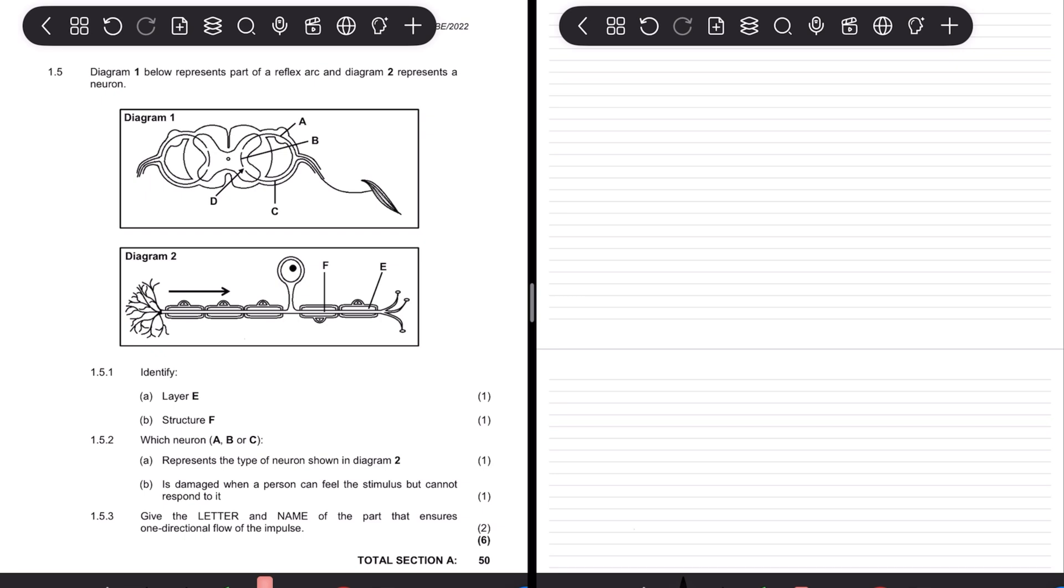Okay, let's go 1.5.1, identify layer E. So you can see in diagram 1 we don't have E, in diagram 2 we have E, and it looks like it's sitting over that line that runs through the whole thing. So obviously we understand those small little ones. So just 1.5.1, letter A would be our myelin sheath.